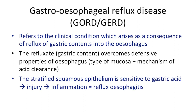The refluxate, or the gastric content, can overcome the defensive properties of the esophagus, which include the type of mucosa — the stratified squamous epithelium — as well as the various mechanisms of acid clearance normally present at that site. This imbalance between the injurious actions of the gastric content and the defensive properties of the esophagus leads to injury to the esophagus.